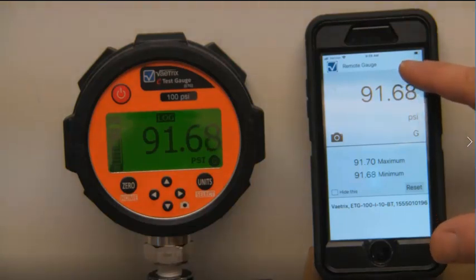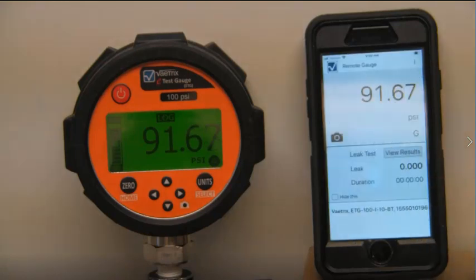Another handy feature we have is the leak test feature. So I am going to start a leak test. As you see we are counting down, we have a real-time clock in the gauge. So this is a pressure decay method. You have to run the test for at least 10 seconds to get meaningful data. We are going to run it for 20, and then I am going to review the results.